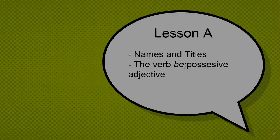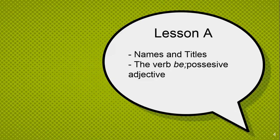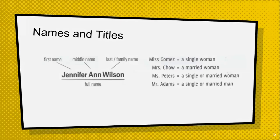Lesson 8: name and titles. The third topic is possessive adjectives. Did you know that this is a name of a woman — Jennifer and Wilson? Three words: Jennifer is a first name and a middle name, and Wilson is a last or family name.